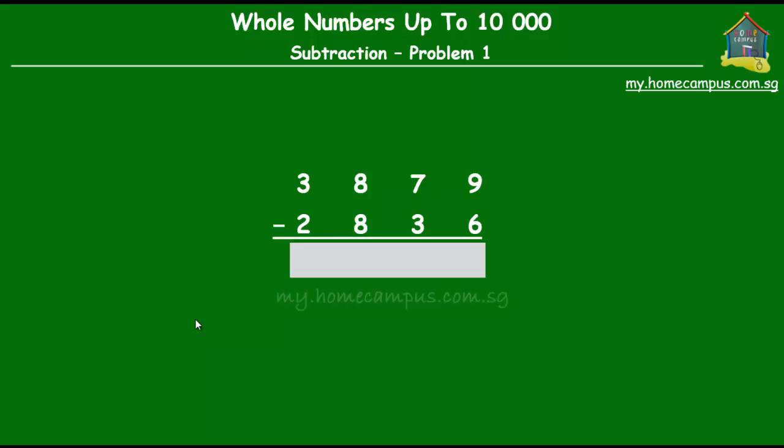The first step is subtract the ones. 9 minus 6 is 3. So 3 ones. Next, subtract the tens. 7 tens minus 3 tens is 4 tens.